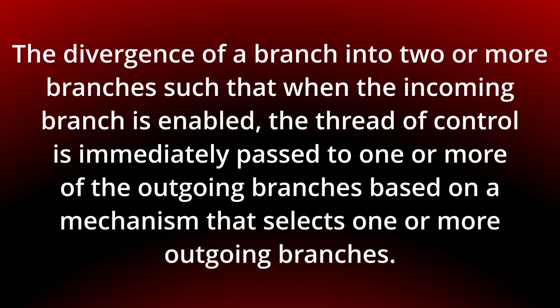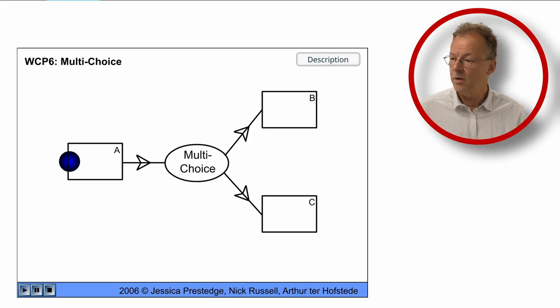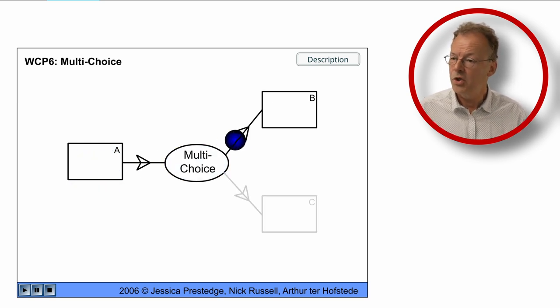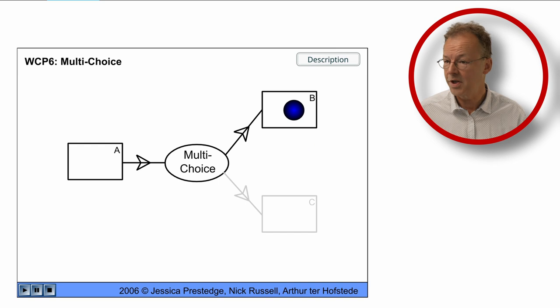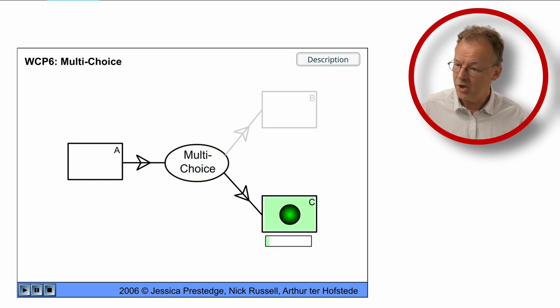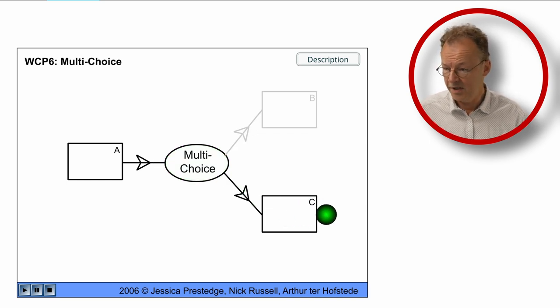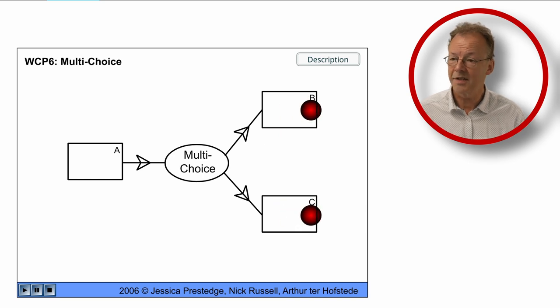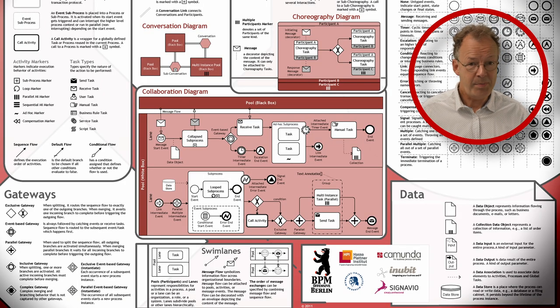You can see the behavior in the original flash animation. So here we execute task A and then we choose the top branch and go to task B. In the second case, we choose the bottom branch and go to task C. And finally, in the third case, we choose both branches and go to tasks B and C.